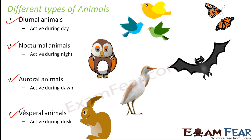Throughout the day, during daytime there is maximum sunlight, during night there is no light, and during dawn and dusk there is limited sunlight. Depending upon how much light is present, the activity of many animals is impacted. Some animals are influenced in their movements, some become more or less active with presence or absence of light, and some animals have their skin color and pigmentation impacted by light.